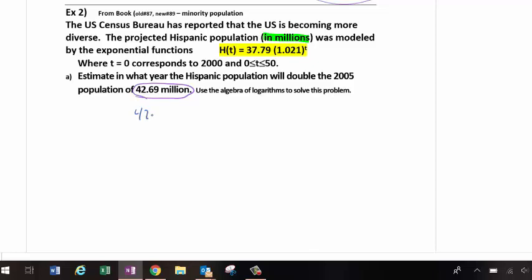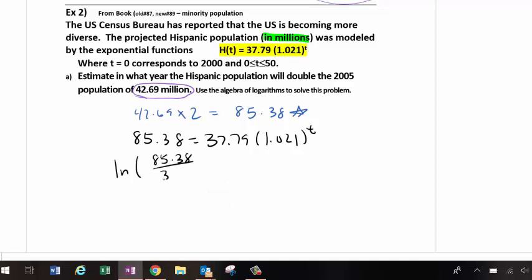So 42.69 times 2 equals 85.38. That's what I want the result to be. That's what I want the population. So I'm going to plug that in. First I need to put it in a form that I can use a natural log, so I'm going to divide both sides by the 37.79. I'm not going to round that. If it comes out exact, great. But if you double round, it will throw the problem off.